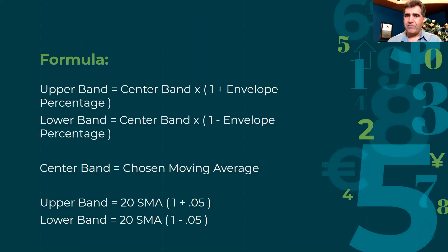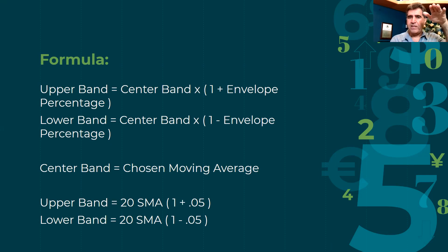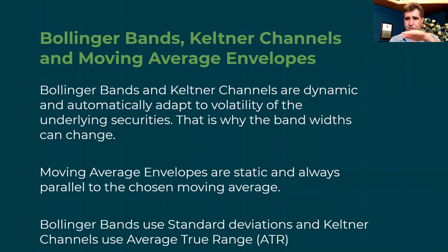The formula is very simple. You choose a center band - your moving average - and add a percentage to it. For example, if you want to see movement within 2.5% of your moving average, it's 1 plus 0.025 times your moving average. If you choose a 20 simple moving average at 100 and use 5%, you multiply by 1 plus 0.05 to get 105 on the upper band, and 1 minus 0.05 to get 95 on the lower band. So all three lines are parallel.